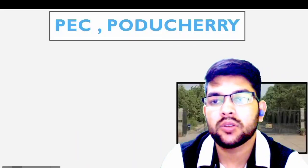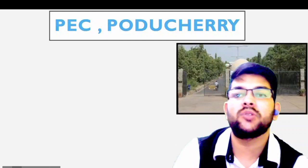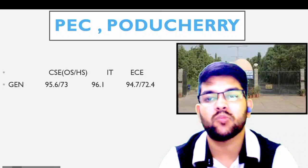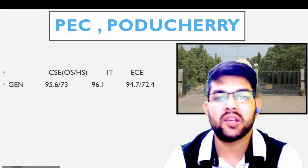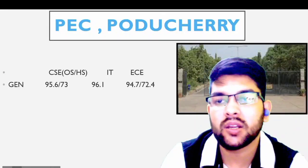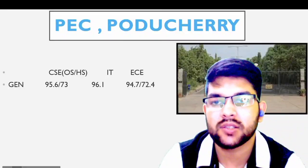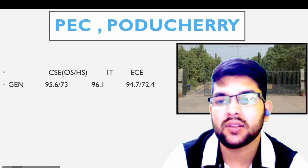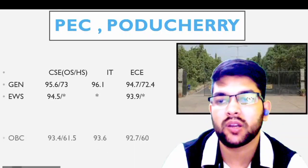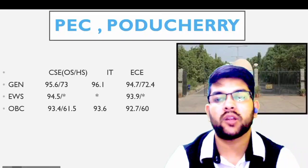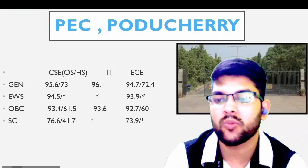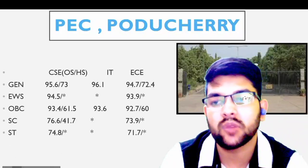Next is Puducherry Engineering College (PEC), Puducherry. Both Home State and Other State cutoffs are available for CSE, IT, and EC. For General: 95.6, 96.1, 94.7; EWS: 94.5, 93.9; OBC: 93.4, 93.6, 92.7; SC: 76.6 and 73.9; ST: 74.8 and 71.7 percentile. There is no separate IT cutoff listed.